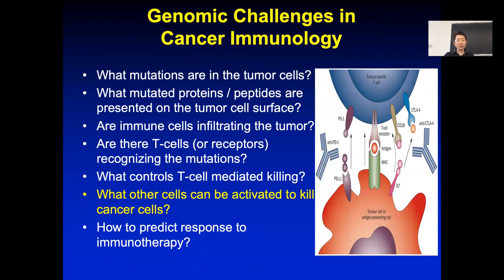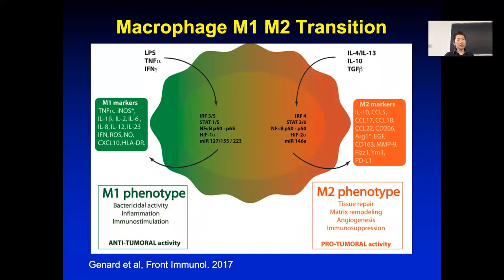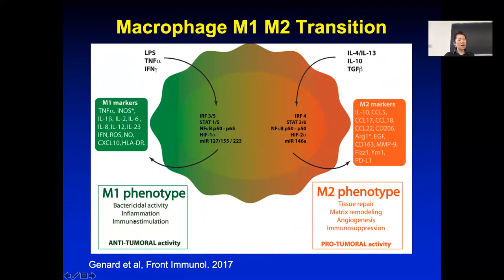What other cells can be activated to kill cancer cells? One is macrophage — the function of macrophage is to eat up something and digest it. However, there are two stages of macrophage with very different gene expression profiles and phenotypes. The M1 type of macrophage has different markers and different cell surface molecules. They are induced by bacterial infection and are pro-inflammatory, activating the macrophage to start killing — to start eating up the bad guys. M1 macrophage is good; it can kill tumors.